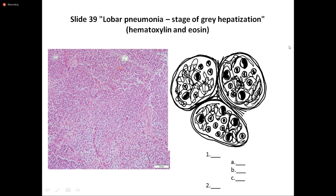To summarize picture number 48: number 1 is fibrinous exudate in the lumen of alveoli. 1A — fibrin fibers; 1B — neutrophils; 1C — macrophages. Number 2 — alveolar septum. These are the two alveoli and the septum between them.